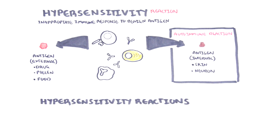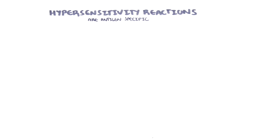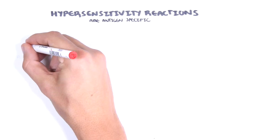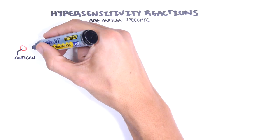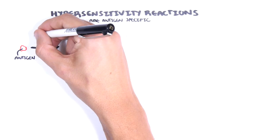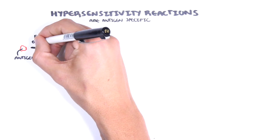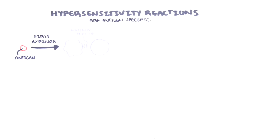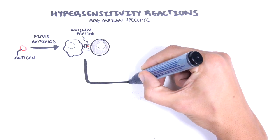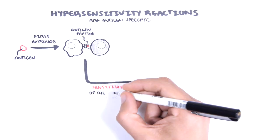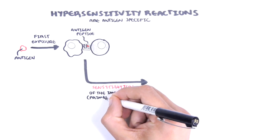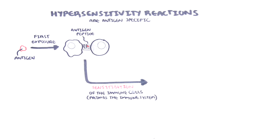Hypersensitivity reactions are antigen specific, because the immune system is educated and primed towards the antigen after the first exposure. First exposure or first contact to an external antigen, such as a drug, pollen, or food, causes the immune system to sensitize itself towards the particular antigen. In other words, it primes the immune system against that antigen.